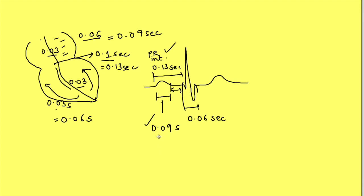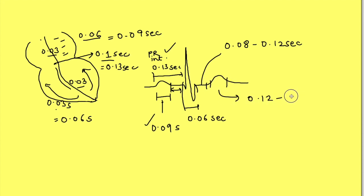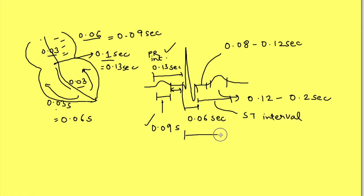Two more values to remember: ST segment duration is 0.08 to 0.12 seconds, and T wave duration is 0.12 to 0.2 seconds. Once you know these, you can calculate the ST interval by adding the two durations, and similarly calculate the QT interval.